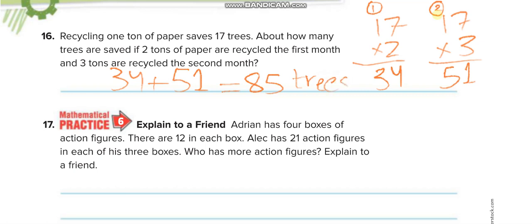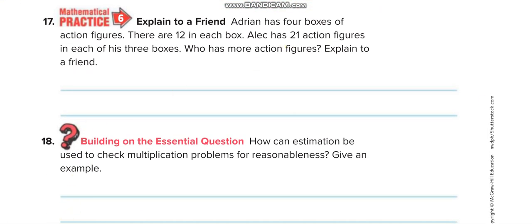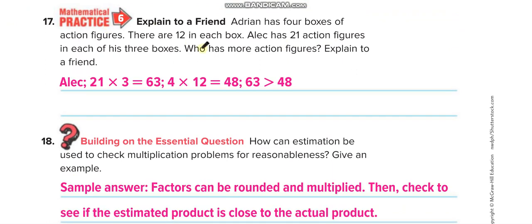Adrian has 4 boxes of action figures. There are 12 in each box, so 4 times 12. This one is for Adrian, 4 times 12 is 48. Alec has 21 action figures in 3 boxes, so for Alec, 21 times 3 is 63.